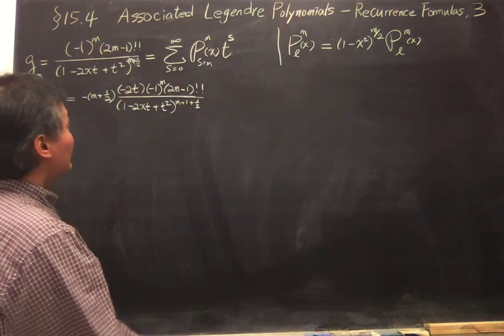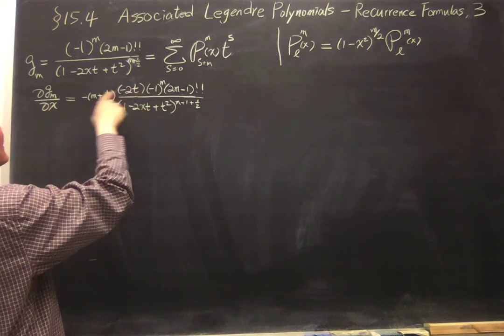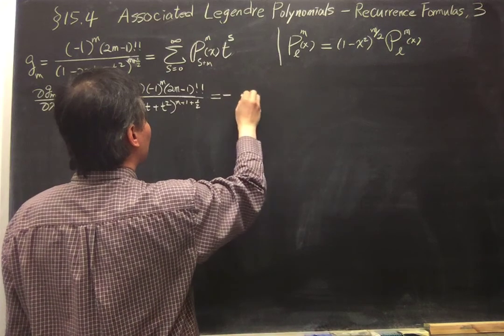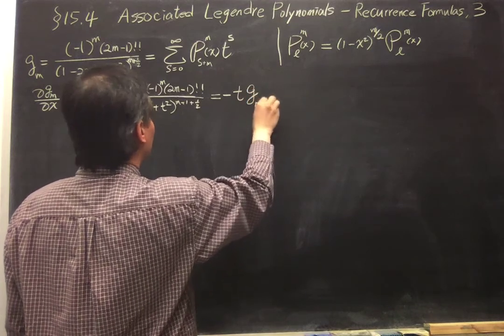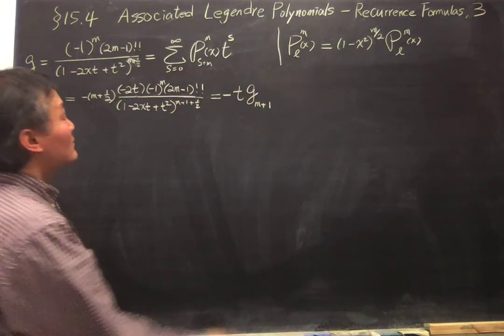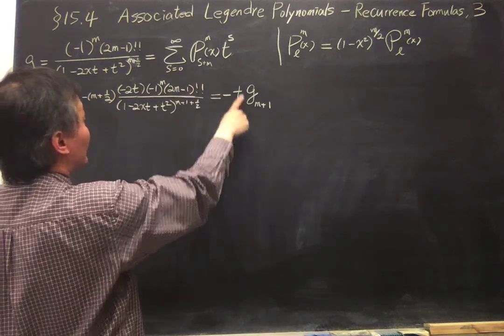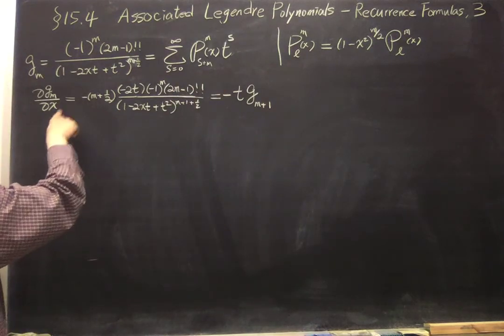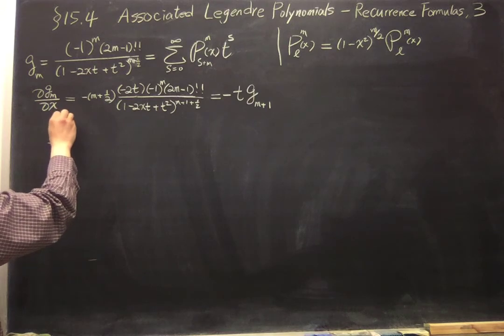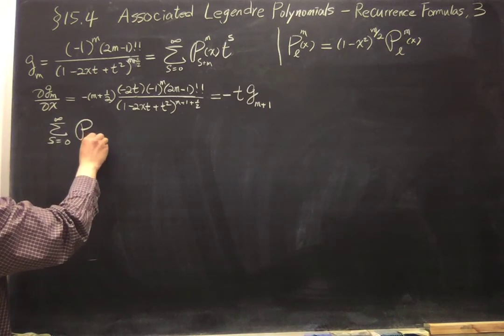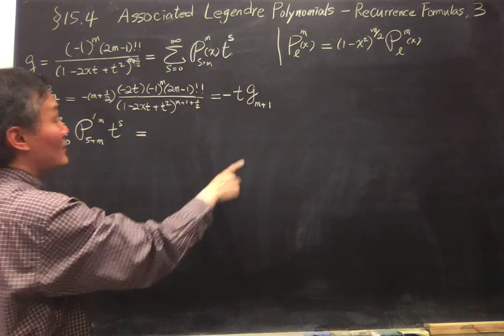Multiply by the only thing left is this t and the negative sign, so negative t times g_{m+1}. So now we can apply the same thing, this into here and also here. So it's taking the derivative of this one, so give you summing s from zero to infinity P_{s+m}' times t to the s.